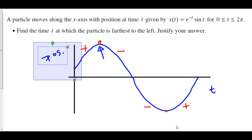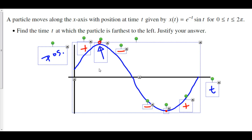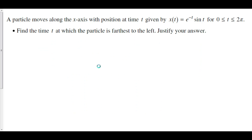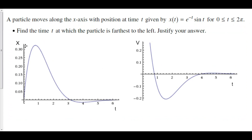The position function and velocity function have been graphed in Wolfram Alpha. On the left is the position function from 0 to 2pi, and on the right is the velocity function from 0 to 2pi. Around time just less than 1, the position is farthest to the right — it's at a max. The position is at a minimum around just less than 4, which is the lowest point, representing the farthest left position.